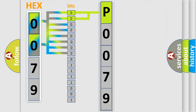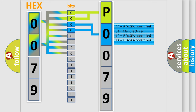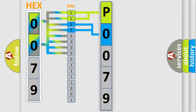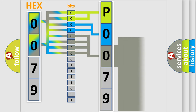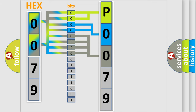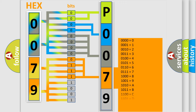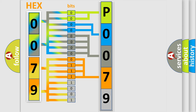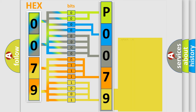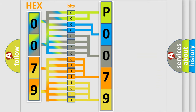The next two bits determine the second character. The last bits of the first byte define the third character of the code. The second byte is composed of a combination of eight bits. The first four bits determine the fourth character, and the combination of the last four bits defines the fifth character. A single byte conceals 256 possible combinations.